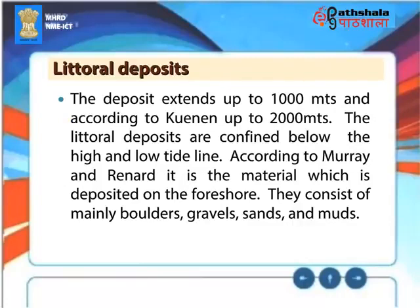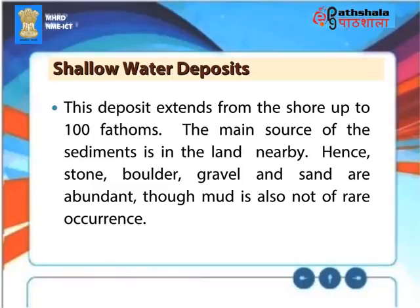Littoral deposits extend up to 1,000 meters and according to Cunin up to 2,000 meters. The littoral deposits are confined below the high and low tide line. According to Murray and Reynard, it is the material deposited on the foreshore and consists mainly of boulders, gravels, sands, and muds. Shallow water deposits extend from the shore up to 100 fathoms. The main source of sediments is the land nearby; hence stone, boulder, gravel, and sand are abundant, though mud is also not of rare occurrence.